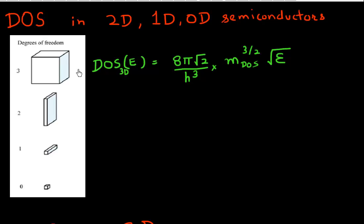In the previous video, we derived the density of states for the case of a three-dimensional semiconductor. We found that it was proportional to the density of state mass to the power of three halves, and also proportional to the square root of energy. This is true for the case where you have a three-dimensional semiconductor — a cuboid of semiconductor material.